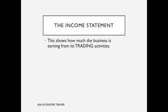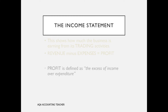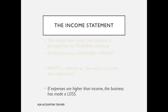The income statement shows us how much the business is earning from its trading activities. Overall, the income statement is built on the formula that revenue — sales revenue minus expenses — equals profit. Profit is defined as the excess of income over expenditure. And of course, if our expenses are higher than our income, then the business has made a loss.